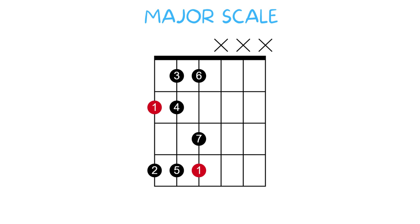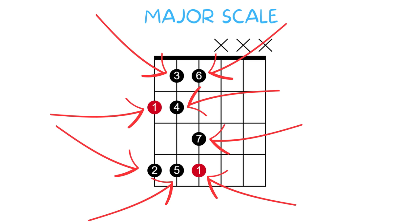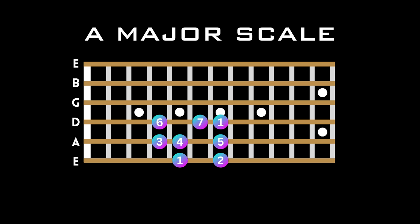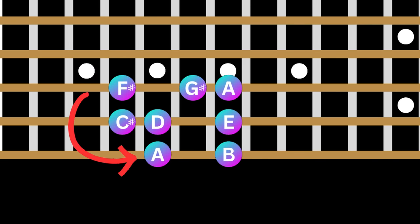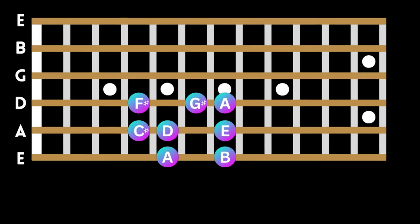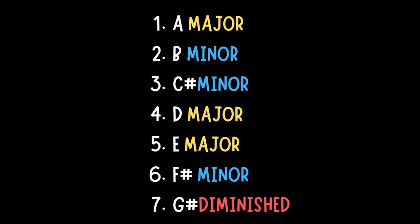As you might already be aware, in any major key we have seven chords each connected to a note in the major scale itself. For example, here is an A major scale, and the seven chords we can derive from this scale would be A major, B minor, C sharp minor, D major, E major, F sharp minor, and G sharp diminished. For each of the notes in the major scale, we can also derive a mode, which is connected to each of these chords and their respective tonalities.